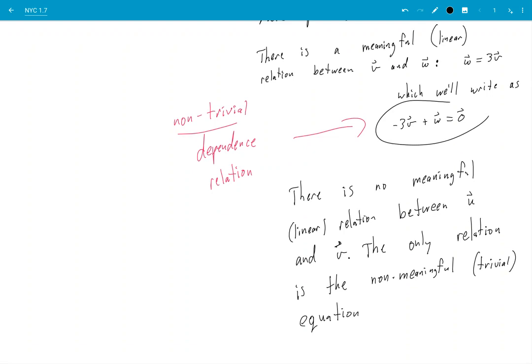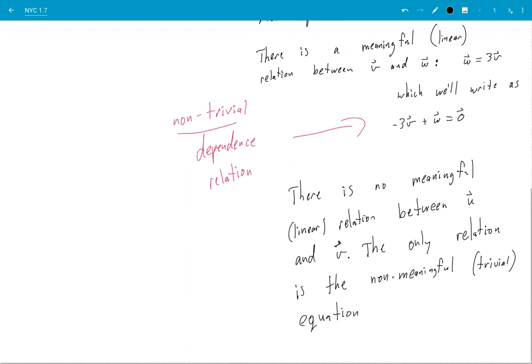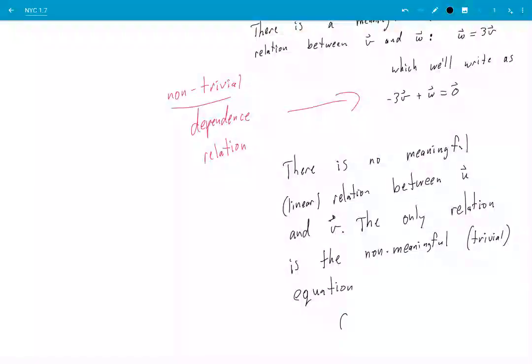The closest I can get is 0u + 0v = 0 vector.